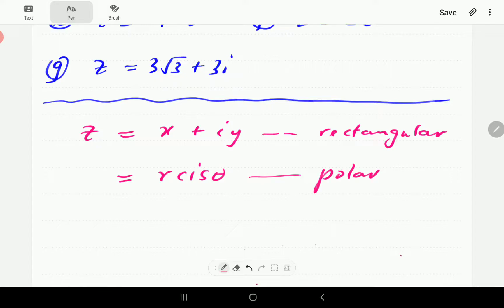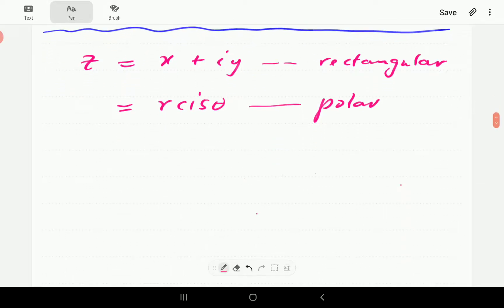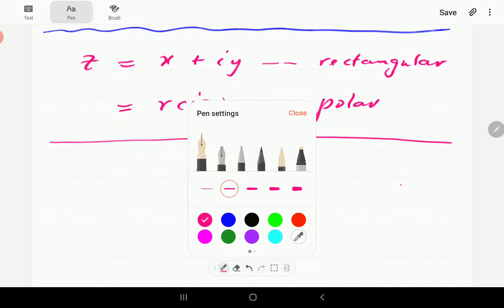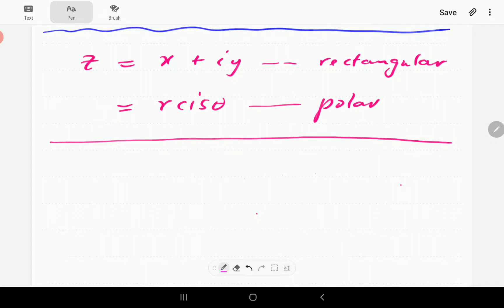Now, r is the modulus of the complex number, theta is the argument. And so for that reason, we strongly recommend that if you're watching this video and you haven't seen our video on the modulus and the argument, you do so before you come back to this one.